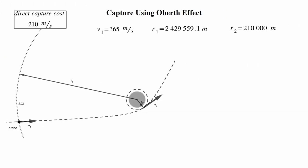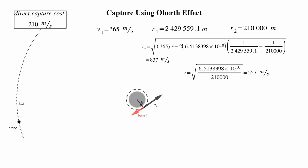Okay, we can calculate the cost of a circular capture at 10 kilometers now. It is the exact same process as before, except with an r2 of 210,000 meters rather than 700,000 meters. Using the conservation of energy law, we would get our speed at 10 kilometers before capture to be 837 meters per second. Our circular orbital velocity at 10 kilometers would be 557 meters per second. Once again, the capture cost would be the difference between these two, which gets 280 meters per second.